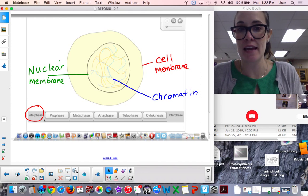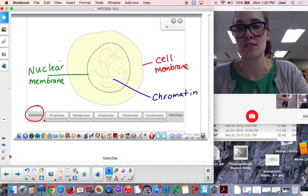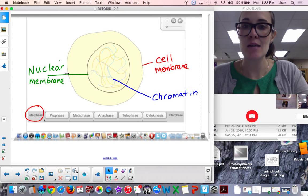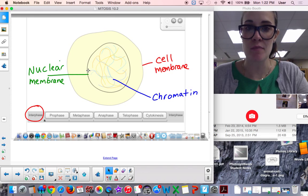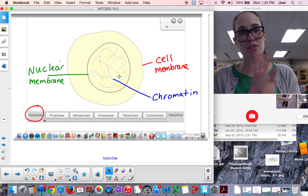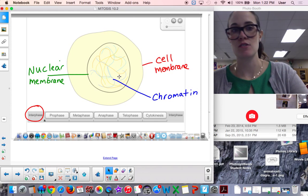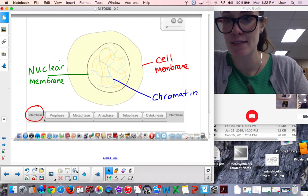So, the first stage of the cell cycle is called interphase. So, circle interphase here. And label these parts. Label the cell membrane. Label the nuclear membrane. And label the chromatin. That's the shape the genetic material is in this nucleus. The form that it takes.